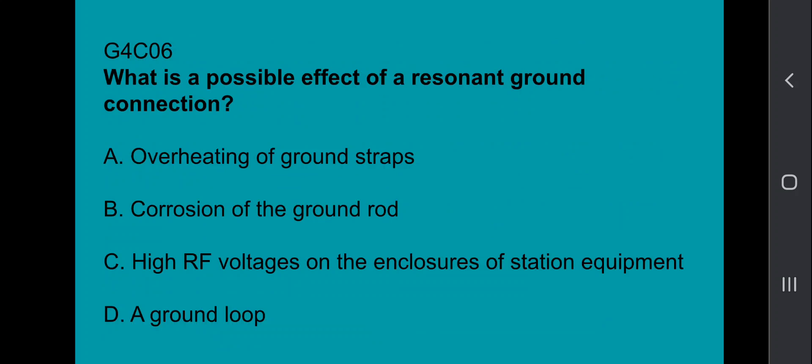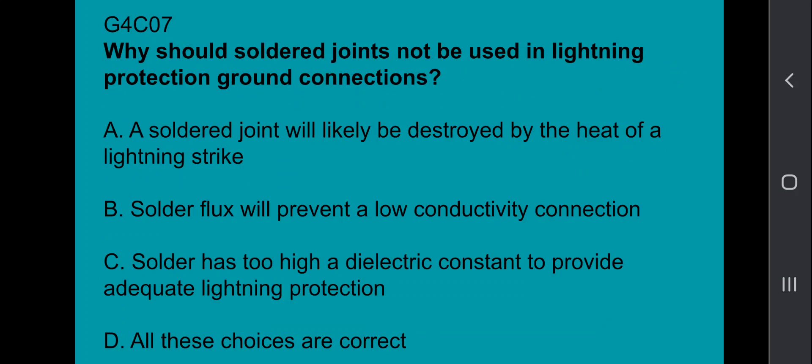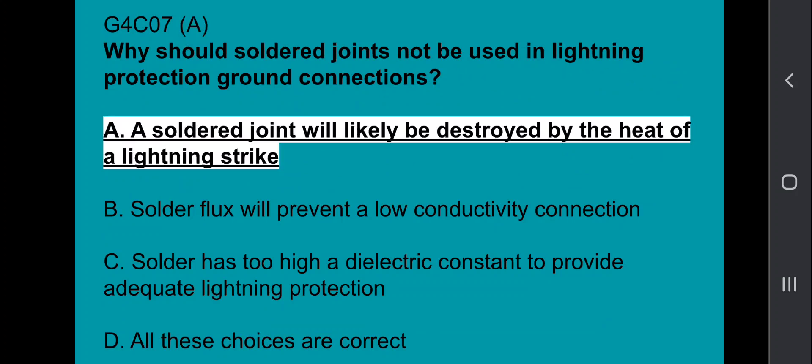G4C06, what is a possible effect of a resonant ground connection? That's going to be high RF voltage on the enclosures of station equipment. G4C07, why should soldered joints not be used in lightning protection ground connections? A solder joint will likely be destroyed by the heat of a lightning strike.